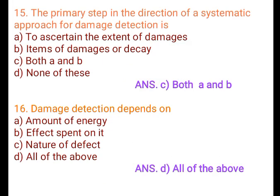Question 15: The primary step in the duration of systematic approach for damage reduction is: A. To ascertain the extent of damages, B. Item of damages or decayed, C. Both A and B, D. None of these. Answer: C. Both A and B.